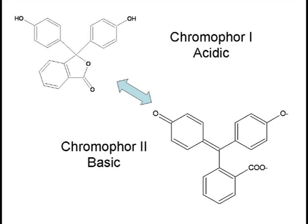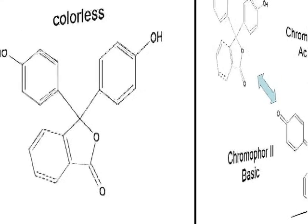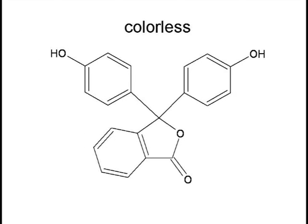Phenolphthalein has two chromophores. Chromophore number one exists in acidic solution and chromophore number two exists in basic solution. Chromophore number one is colorless.